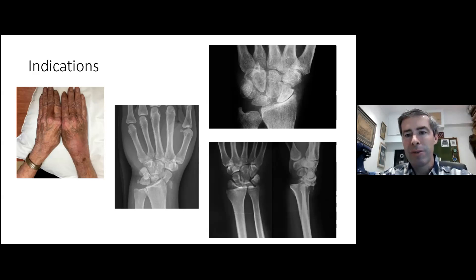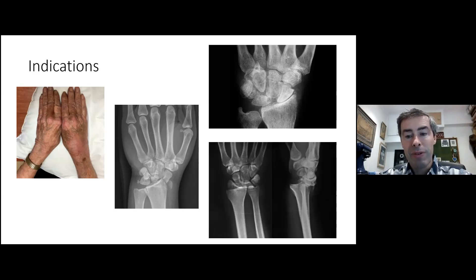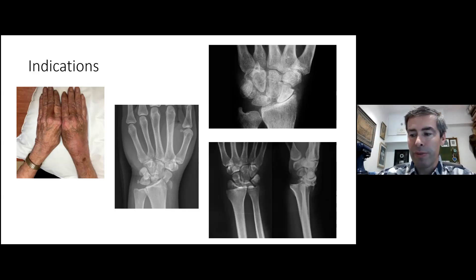Further indications include wrist arthritis — you can see a slack wrist top right — and the more complex radiocarpal dislocations, which are radiocarpal dislocations with a fracture of the radial styloid as opposed to a distal radius fracture. Finally, distal radius fractures which require buttressing from behind as opposed to a volar locking plate.